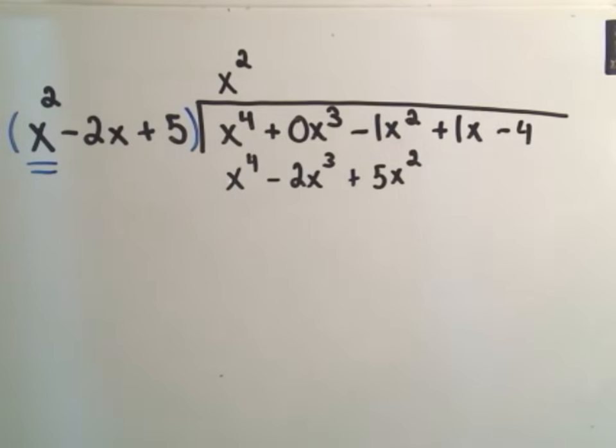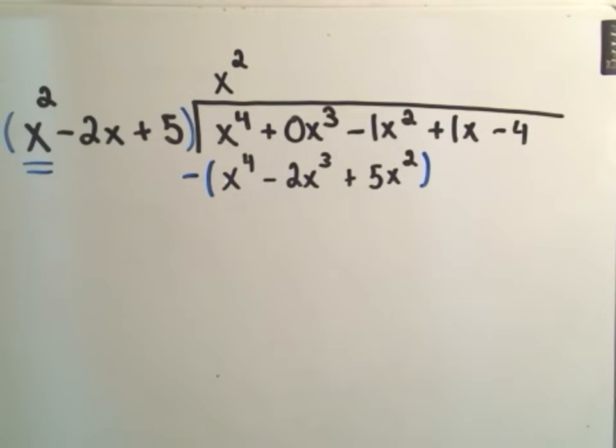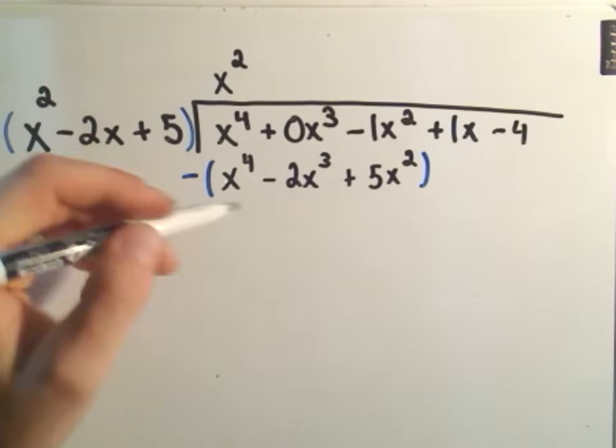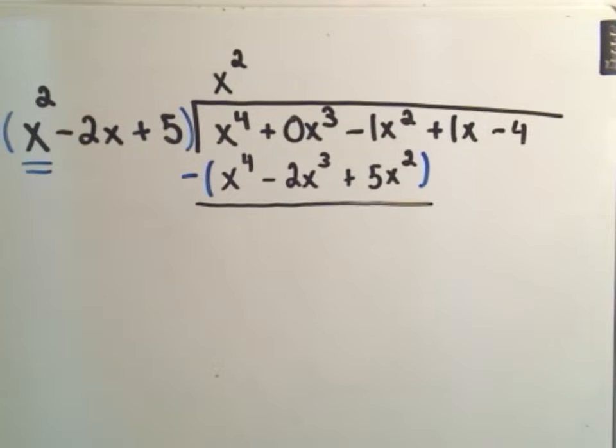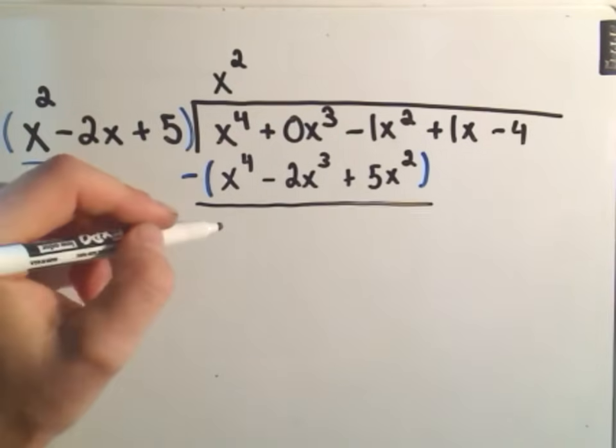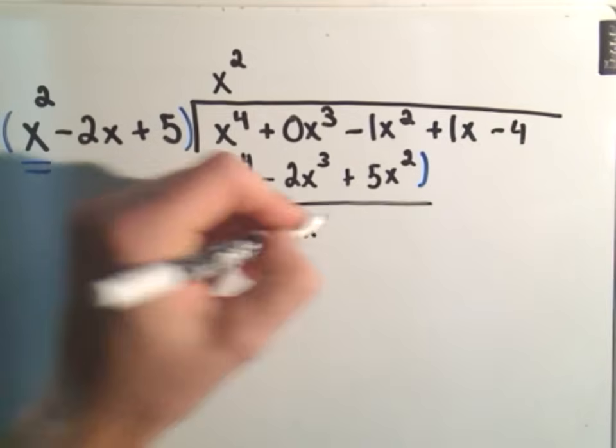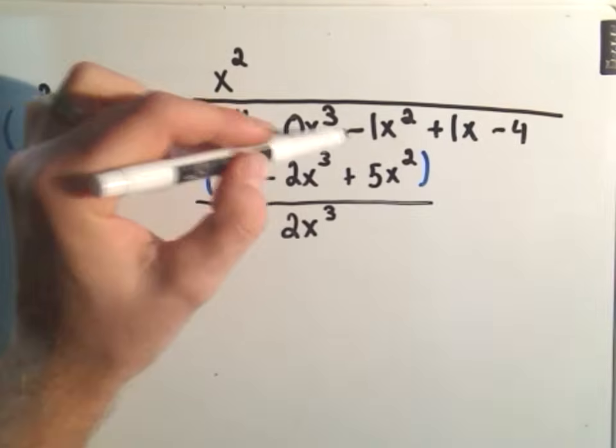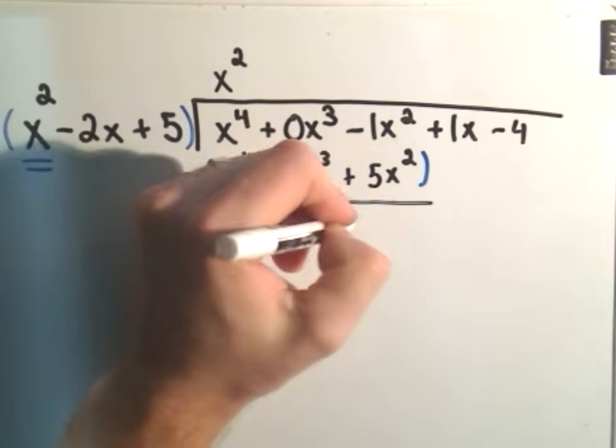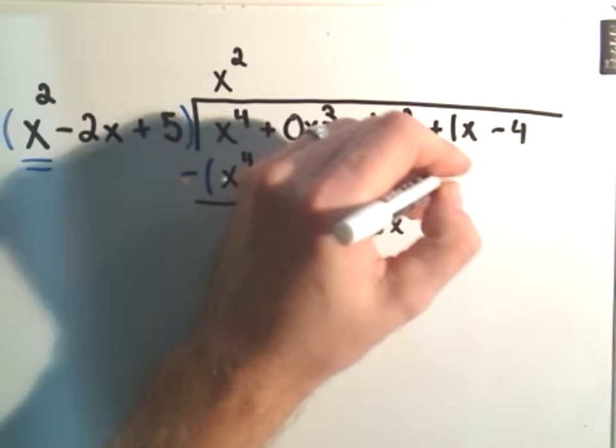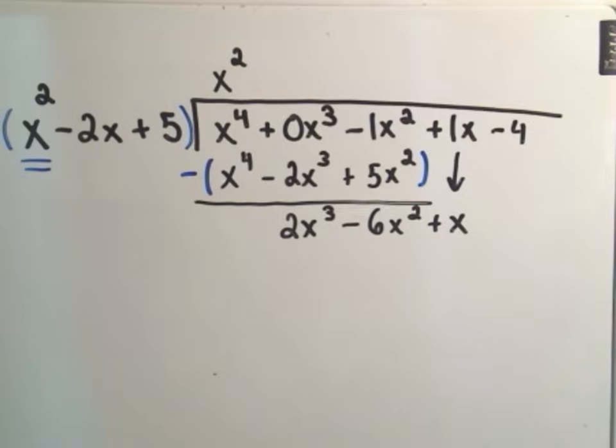I like to put all this stuff in parentheses before I subtract because it reminds me I have to distribute this negative sign out. So the first term should always cancel out or you've done something wrong. So we get 0x to the fourth. Two negatives make a positive, 2x to the third. Notice I'll get 1x squared minus 5x squared, so that's negative 6x squared. And then we drop down our next number, which is just our positive x.